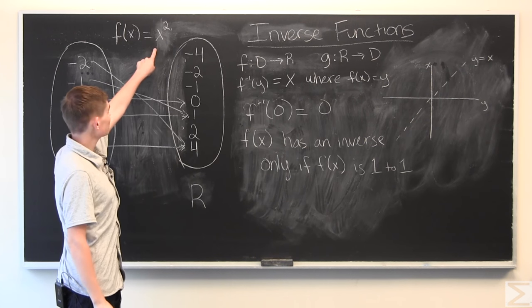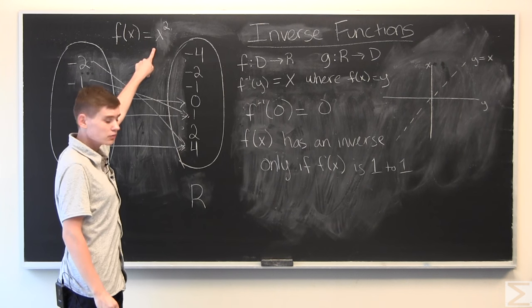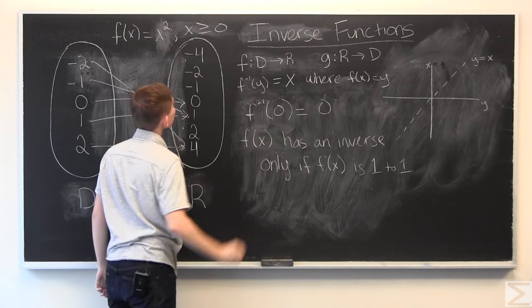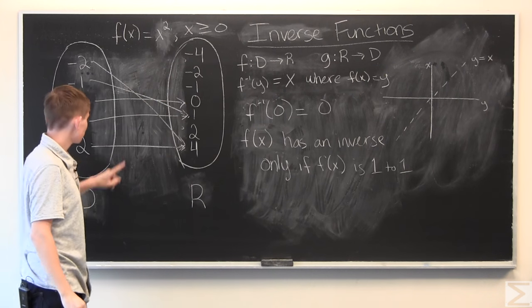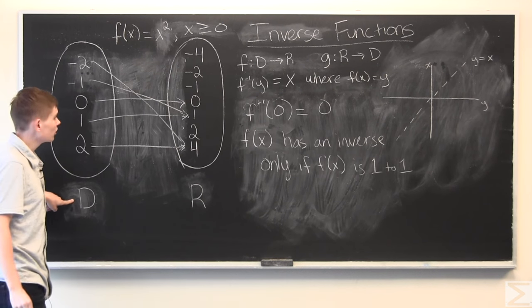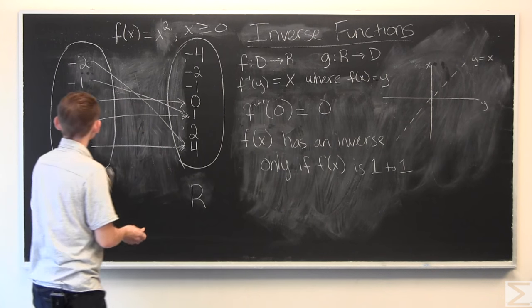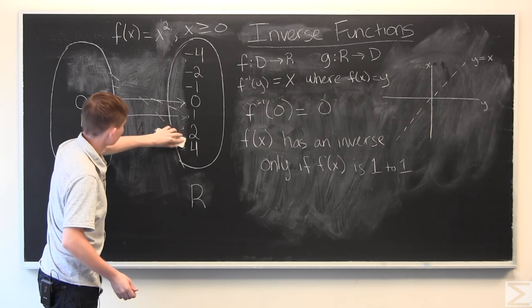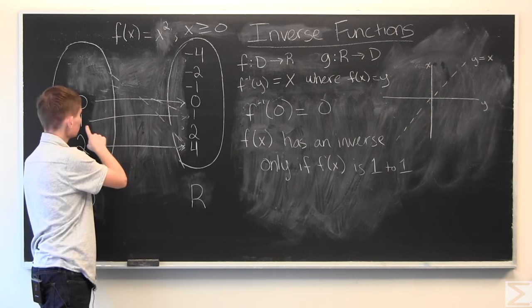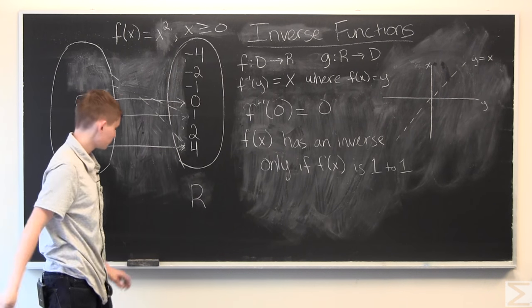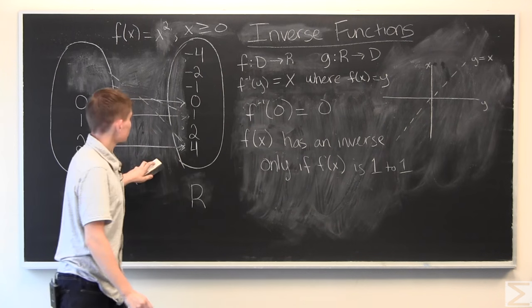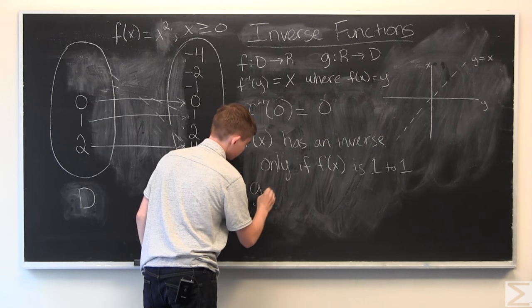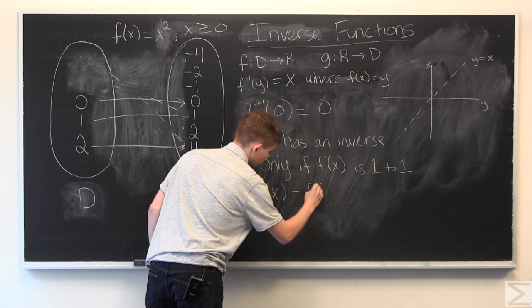So, we can still find an inverse, but we have to make this function 1 to 1. And how we do that is we define x to only be greater than or equal to 0. And by doing that, what we're doing is we are restricting the domain of this function. So, negative 2 and negative 1 go away. And so, we're only left with 0 mapped to 0, 1 mapped to 1, and 2 mapped to 4. So, this has a well-defined inverse function, which hopefully you should see is just square root of x.